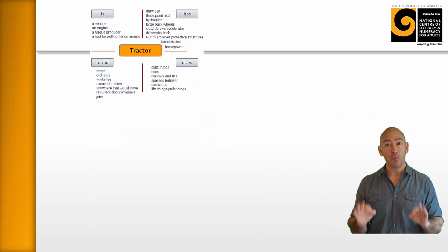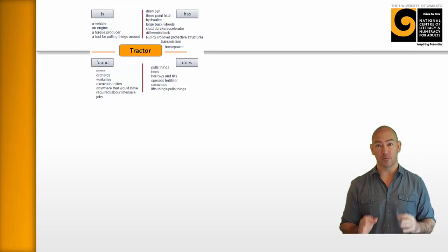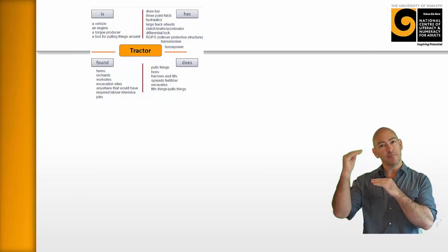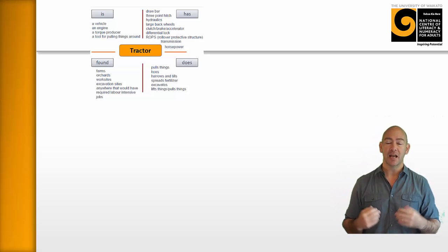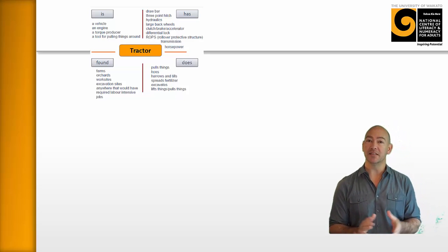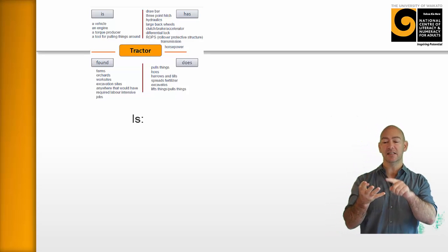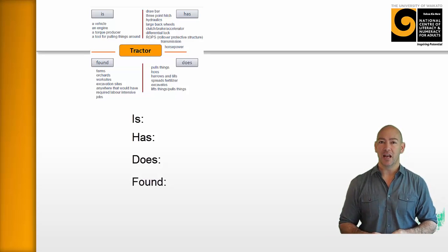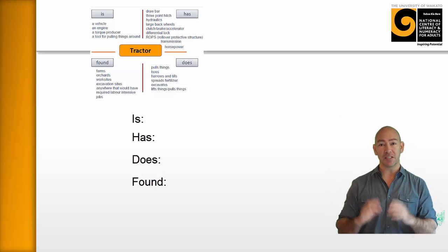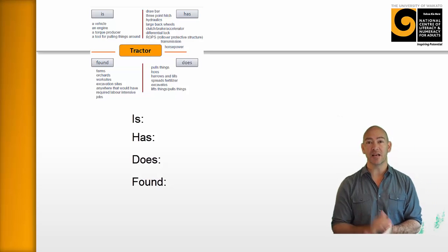Now, the concept map is more than just a structured brainstorm, although it is that. It also has multiple levels of complexity. And I'll just share with you what one of these is. The four tags is, has, does, and found allow the learner to not only structure their thinking, but to categorize their thinking. I'll give you an example.